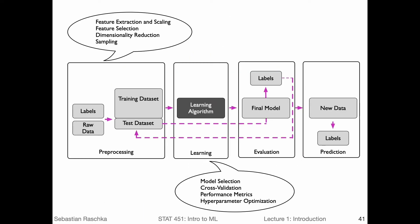Here is a flow chart that is a little bit more detailed. The basic components are the same as on the previous slide: I have my training set, I have a learning algorithm, and I get a model. Then we can use the model to make predictions on new data. However, here are a few more details. So in practice, before we get the training data, we also usually have to do some preprocessing.